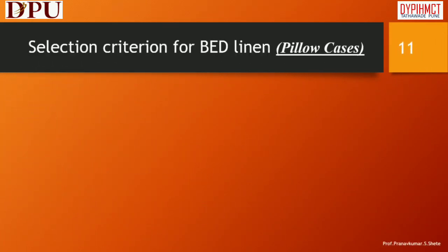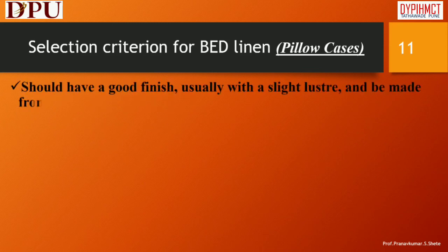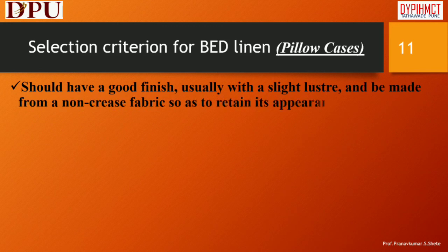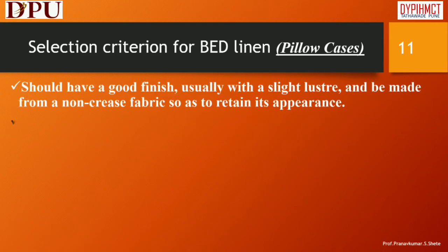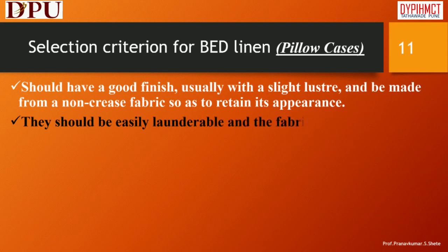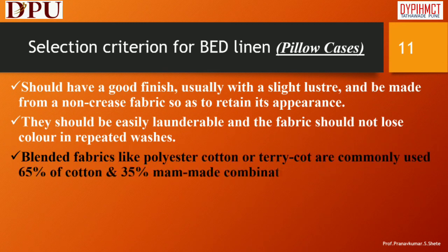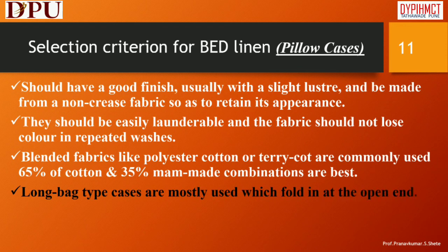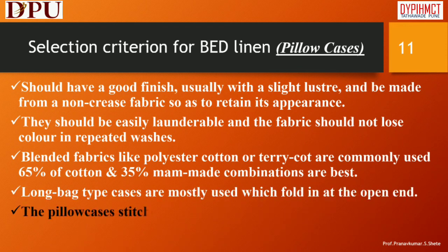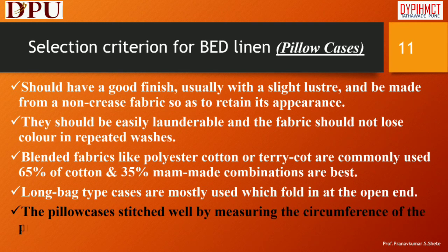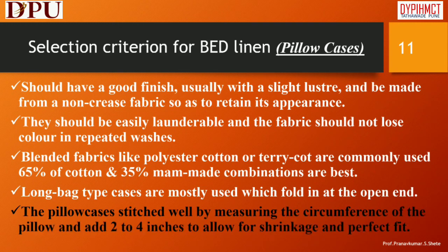Selection criterion for bed linen — Pillow Cases: Should have a good finish, usually with a slight luster, and be made from a non-crease fabric so as to retain its appearance. They should be easily launderable and the fabric should not lose color in repeated washes. Blended fabrics like polyester cotton or terricot are commonly used; 65% cotton and 35% man-made combinations are best. Long bag type cases are mostly used which fold in at the open end. The pillow case is stitched well by measuring the circumference of the pillow and adding 2 to 4 inches to allow for shrinkage and a perfect fit.